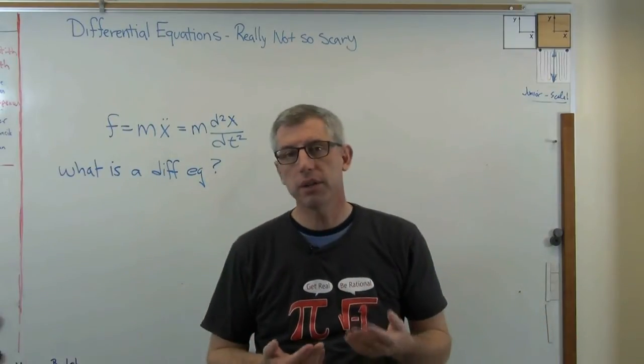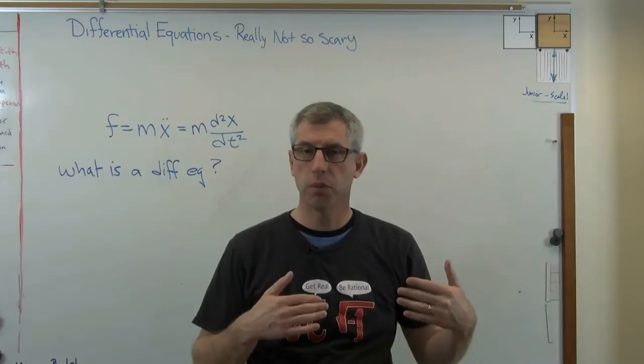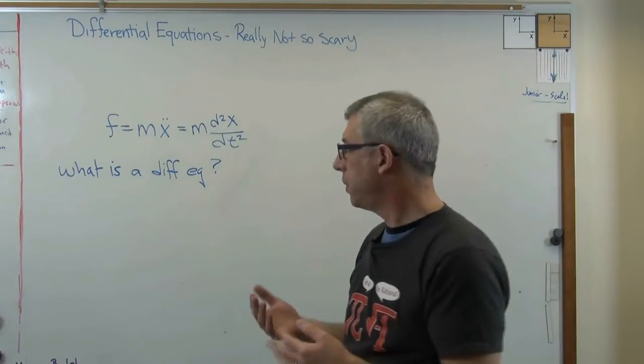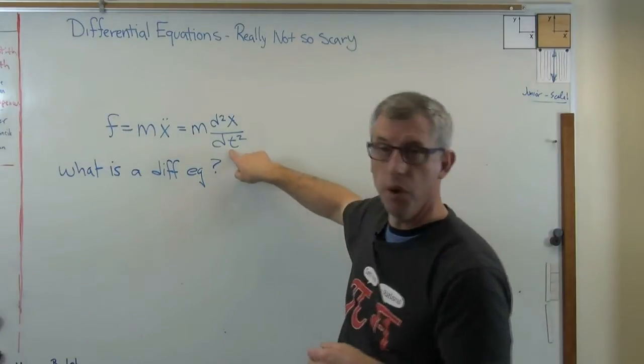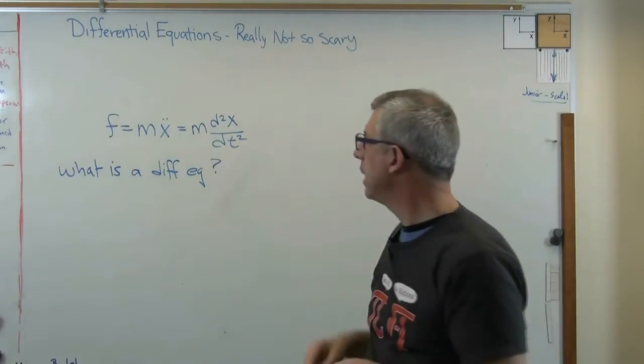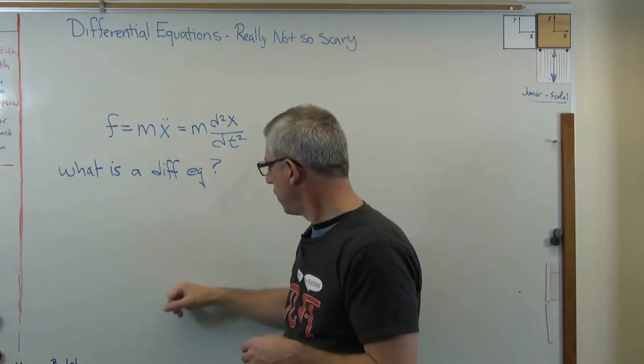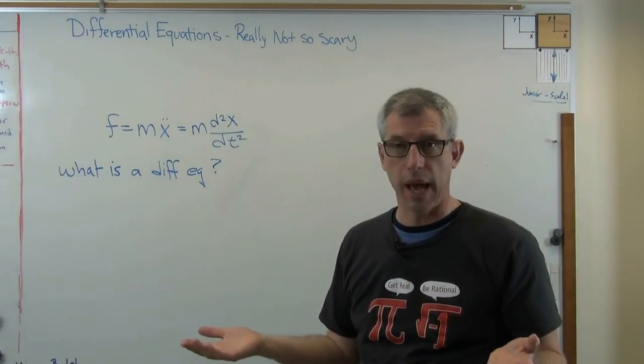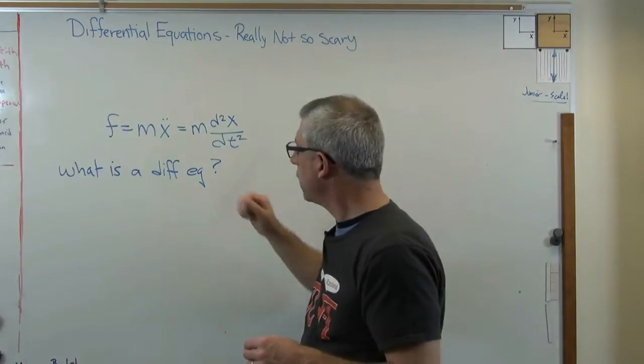There are lots and lots and lots of reasons, physical problems, why you need the slope of some variable to appear in an equation, or sometimes a slope of a slope. Happens all the time. So, it's just a mathematical problem, a function that has a slope in it. That's it. There's nothing more to it than that.